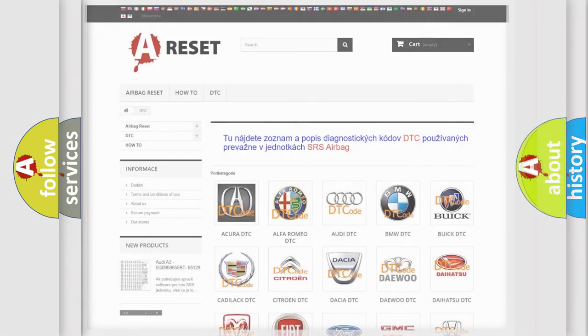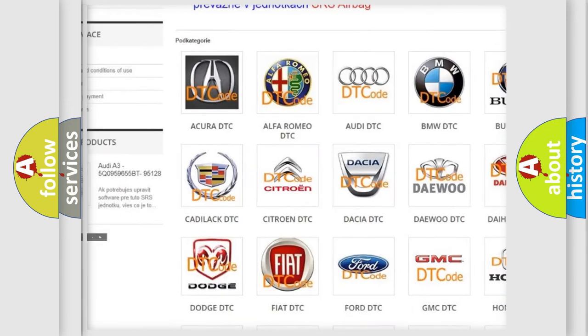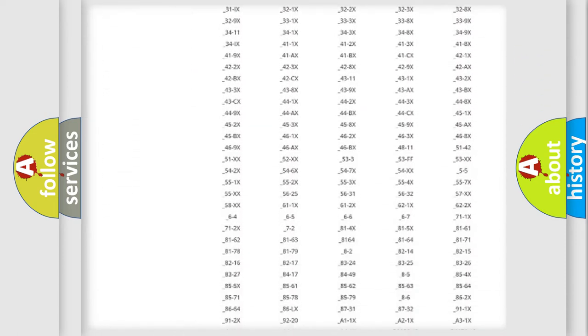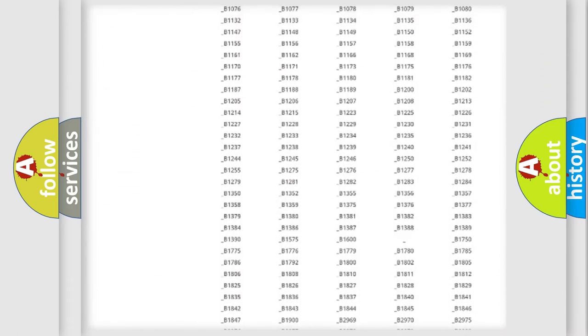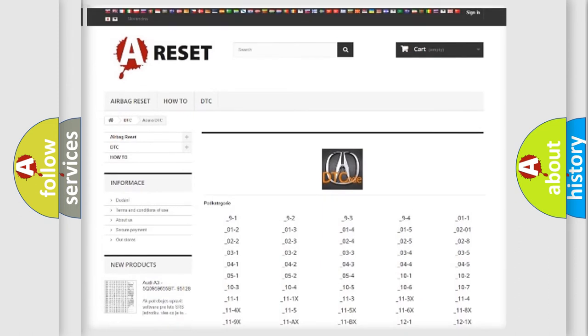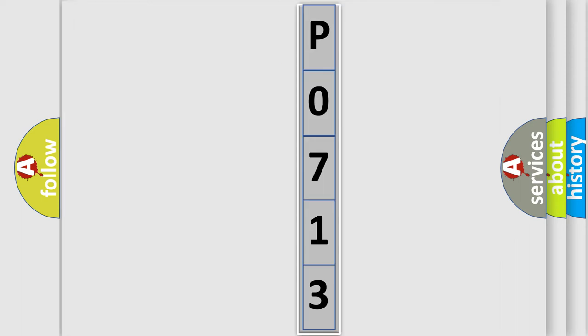Our website airbagreset.sk produces useful videos for you. You do not have to go through the OBD2 protocol anymore to know how to troubleshoot any car breakdown. You will find all the diagnostic codes that can be diagnosed in Acura vehicles, also many other useful things. The following demonstration will help you look into the world of software for car control units.